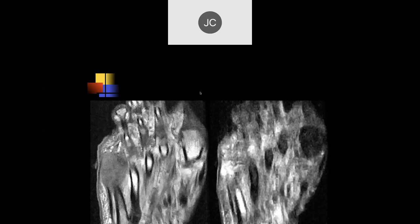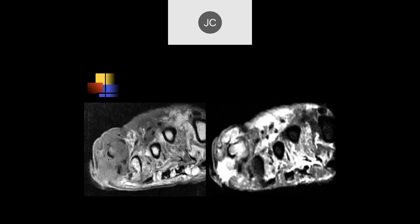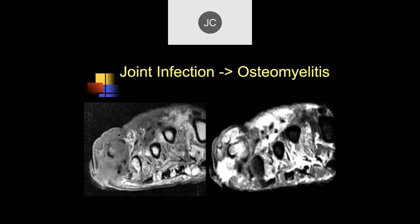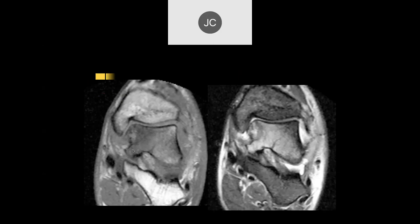There's a lot of soft tissue that looks like it's eroding away at the fifth distal metatarsal. On the coronal images, there's a lot of bony destruction, soft tissue thickening, and fluid. This was an infection of the fifth metatarsophalangeal joint — a big abscess with osteomyelitis.